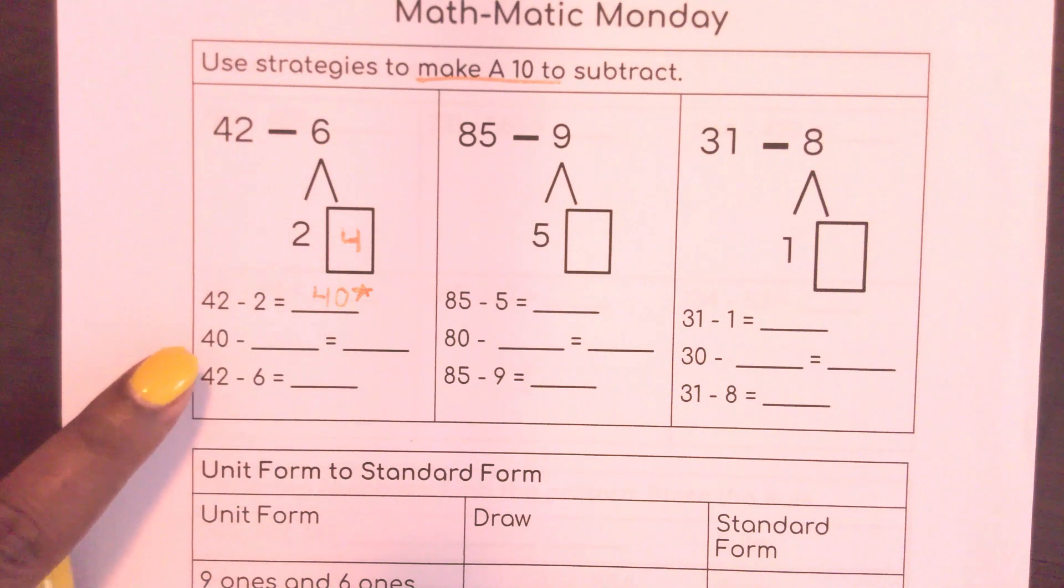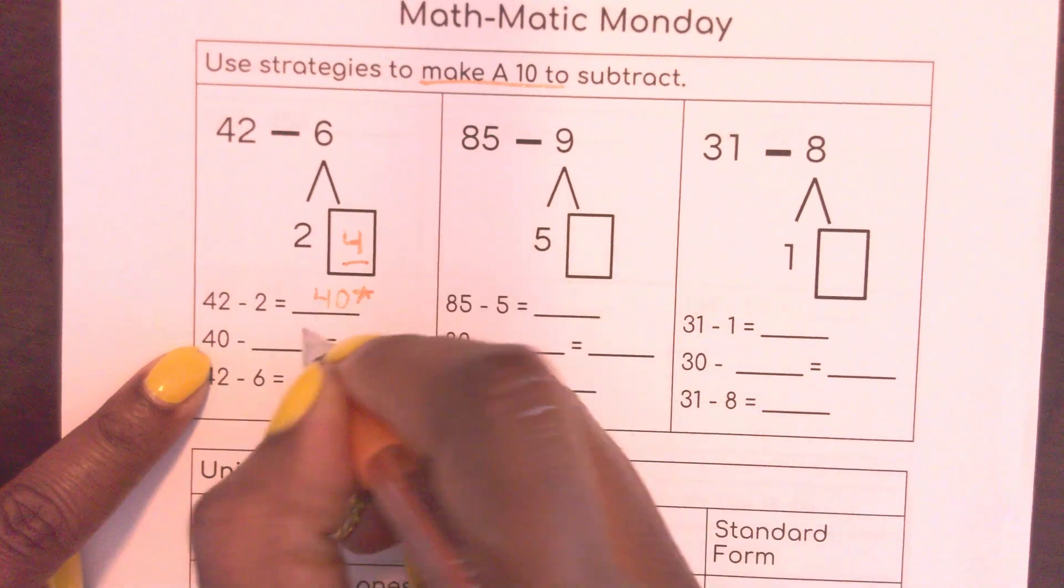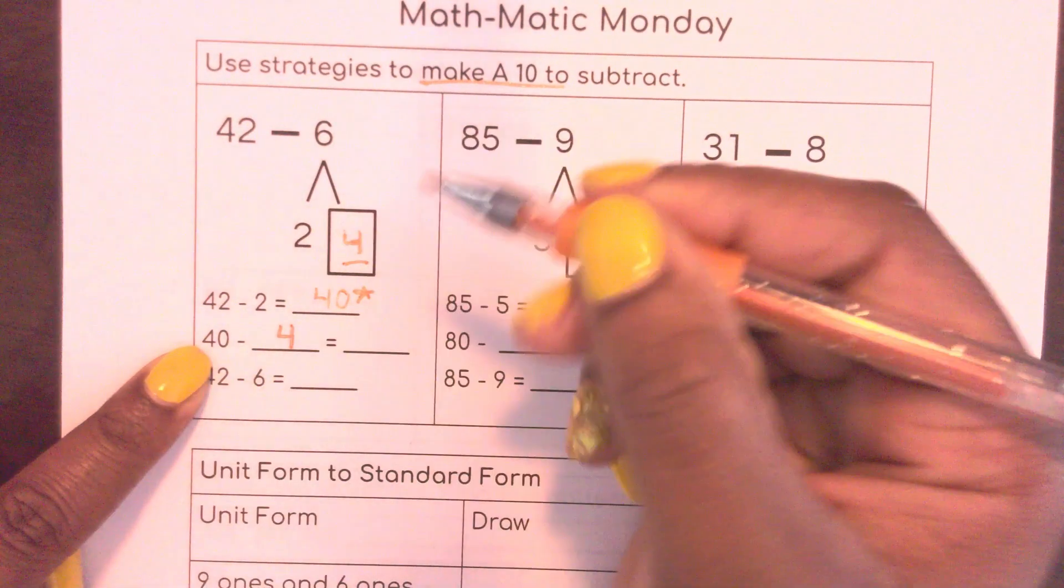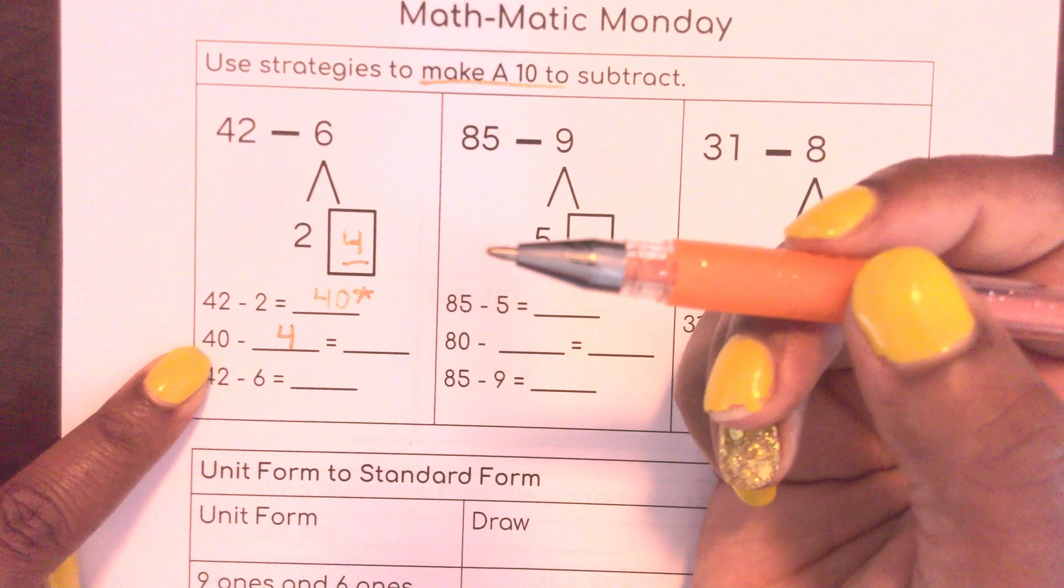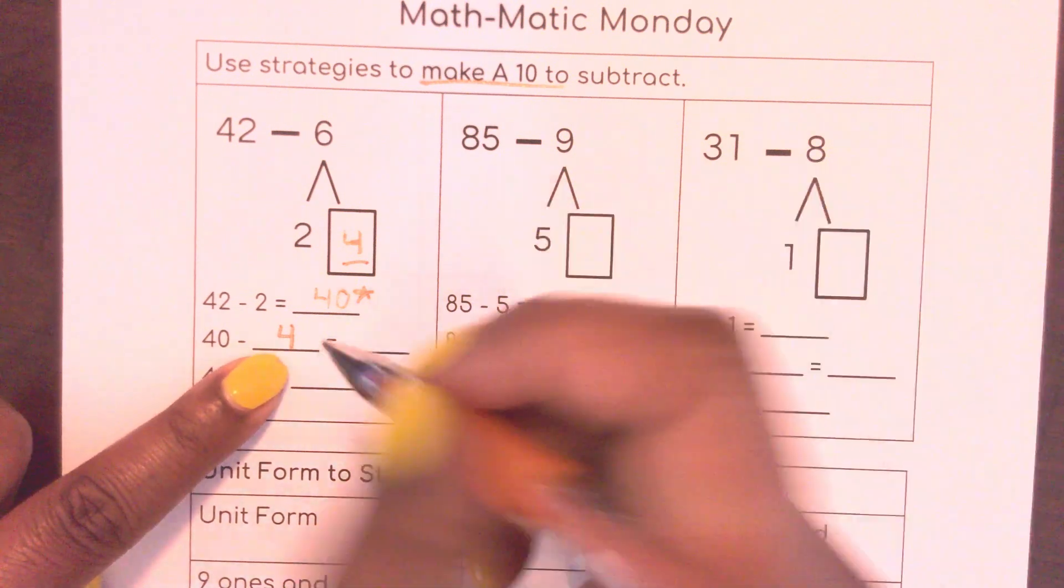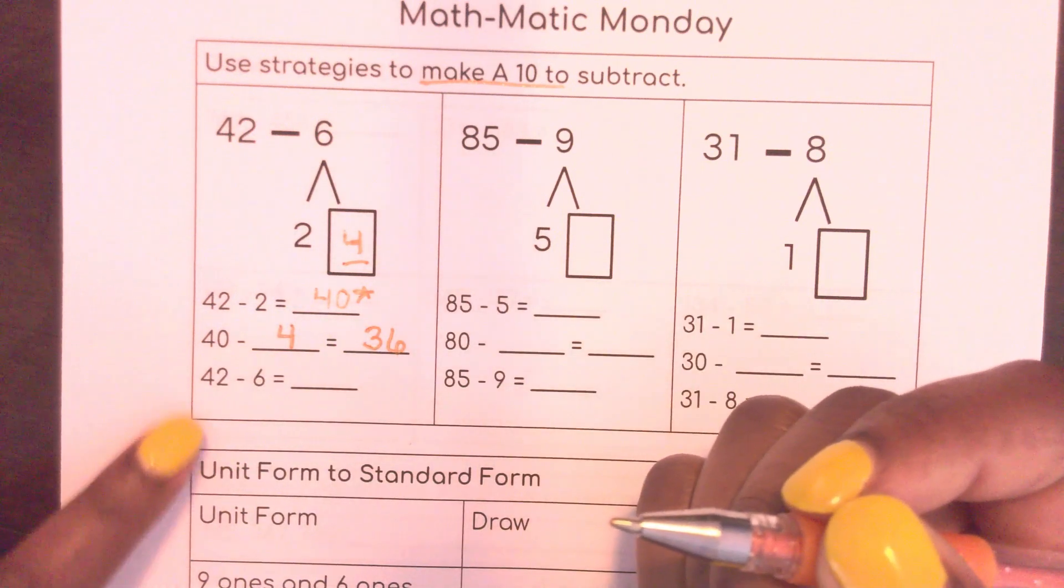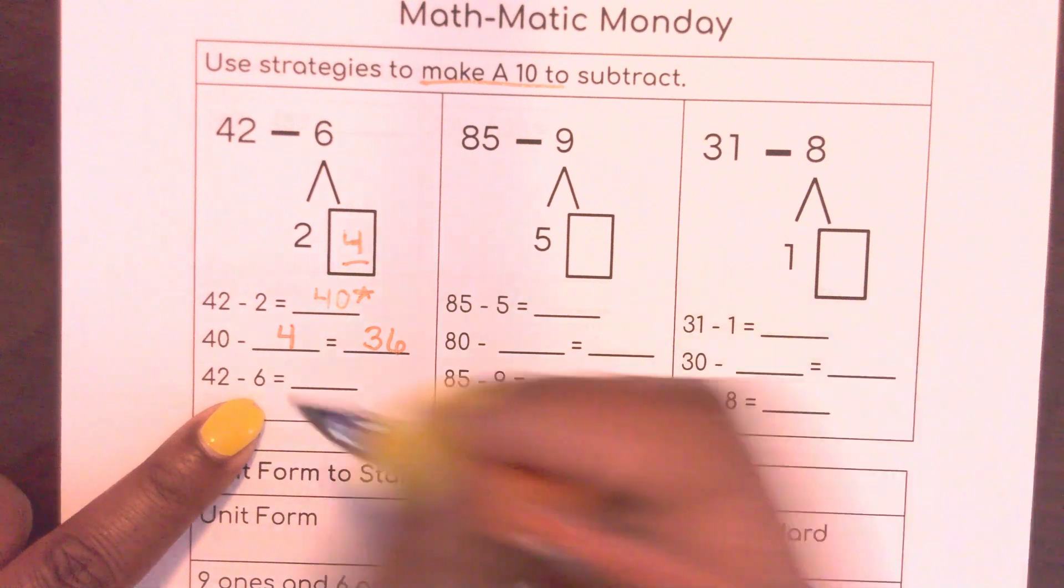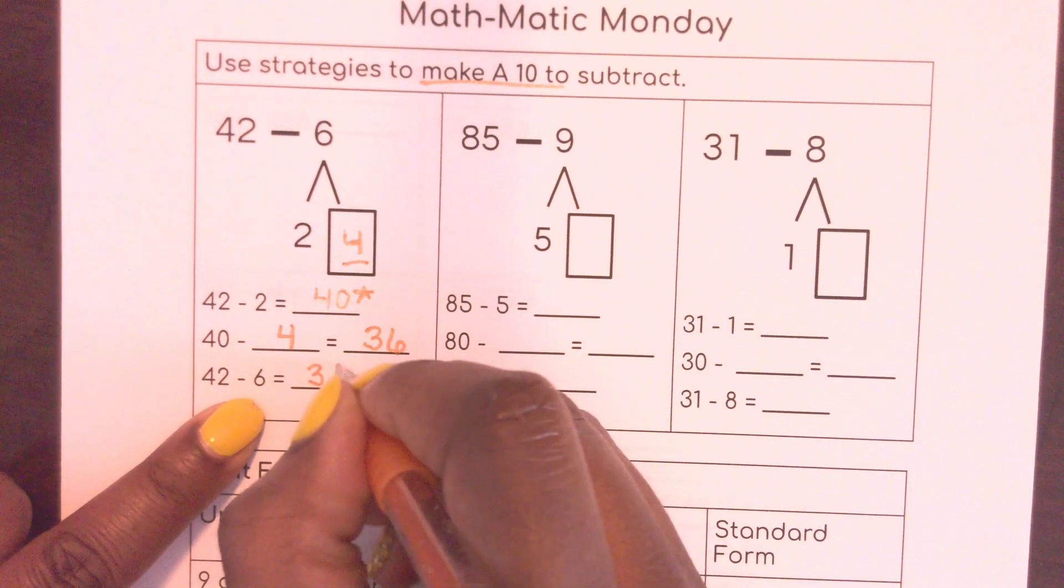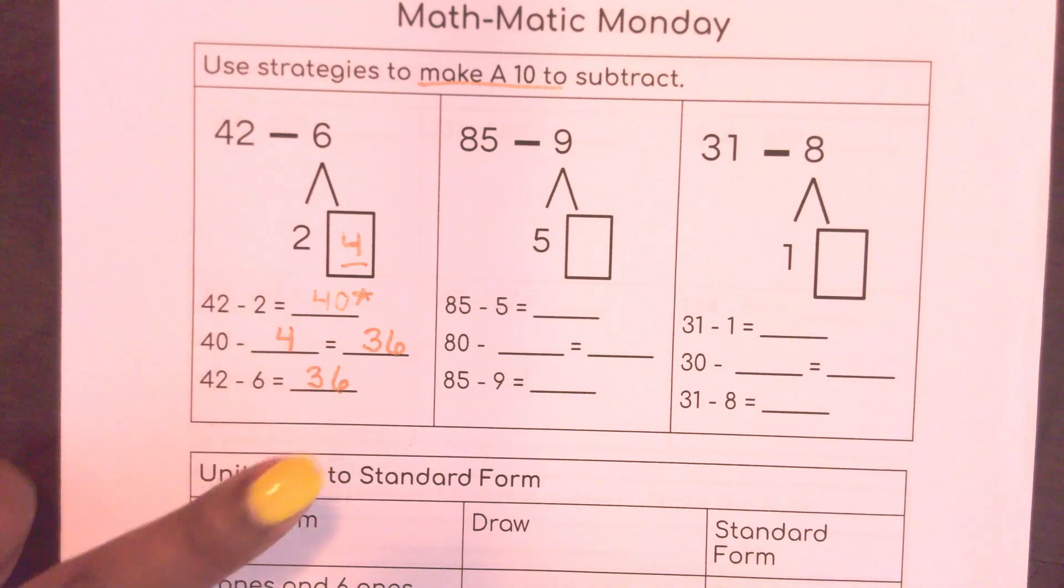So now I'm going to do 40 minus 4, the other half of that 6 or the other part of that 6. So 40 minus 4 would give me 36. So now I know 42 minus 6 is 36. It's so important to know how to make 10, how to subtract 10 in groups of 10.